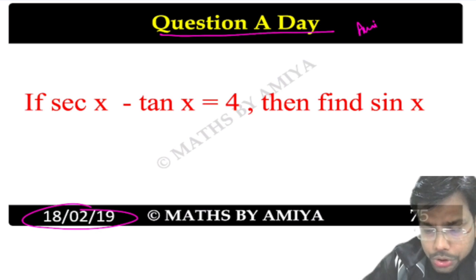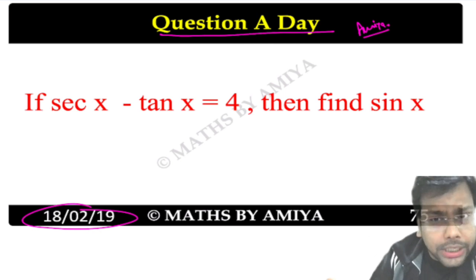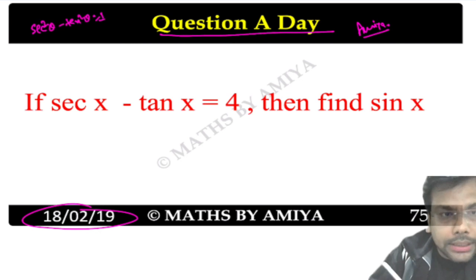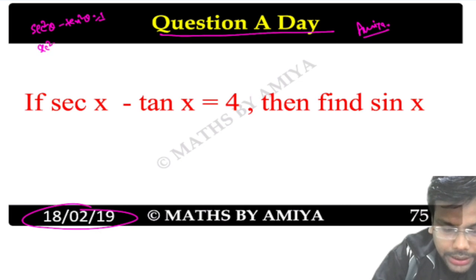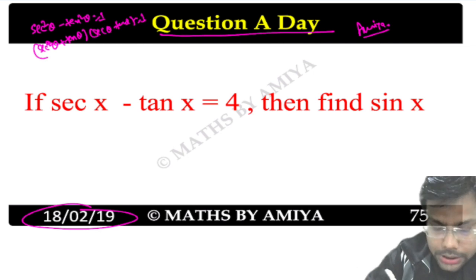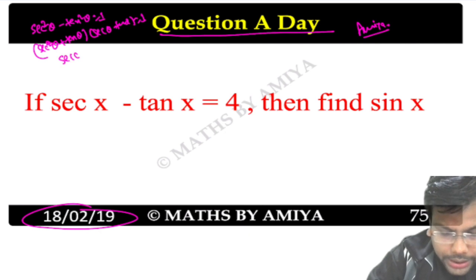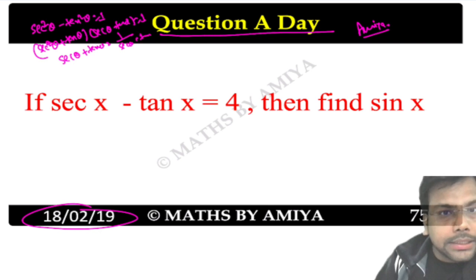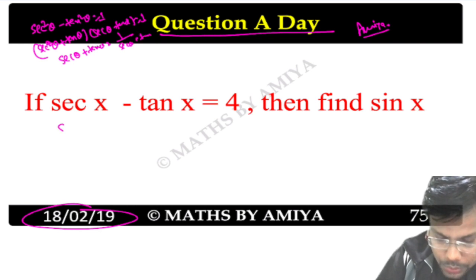The best concept here is very simple: sec²θ - tan²θ = 1. We can see that sec θ + tan θ and sec θ - tan θ form an a² - b² pattern equal to 1. So sec θ + tan θ = 1 divided by (sec θ - tan θ).